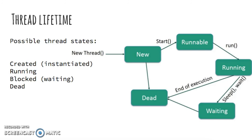Threads have four main states. Number one, the thread is created or instantiated, but it has not started running. Number two, the thread is running or is currently executing code. Number three, the thread is currently waiting to run its code — waiting could mean it's waiting for its turn in the execution pipeline, it's sleeping, or it's blocked. And number four, a thread could be dead or completed.